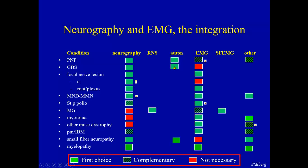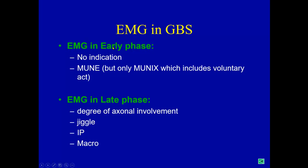In Guillain-Barré, it may be important to make autonomic testing. Regarding EMG: in the early phase, when you see a patient at day 2, 3, or 4, there is really no indication for EMG. You see a reduced interference pattern if there is weakness, otherwise nothing. Motor unit number estimation techniques can be of value, particularly MUNIX, which includes voluntary contraction — not only stimulating the nerve peripherally, where it can be completely normal. Later in the Guillain-Barré phase, after many weeks, we may see denervation and the beginning of reinnervation, and here EMG can be of value.